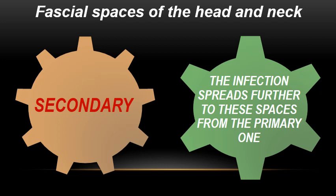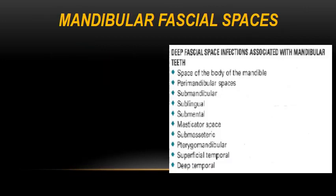To recapitulate: the primary facial spaces take the infection directly from the offending teeth, and through their communications to other facial spaces, the infection spreads to the secondary facial spaces. Now let's go through an overview of the different mandibular facial spaces related to infections spreading from the mandibular teeth.